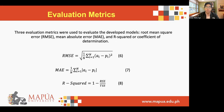Three evaluation metrics were used to evaluate the developed models: the root mean square error (RMSE) as shown in equation 6, the mean absolute error (MAE) as shown in equation 7, and the R-squared or coefficient of determination as presented in equation 8.